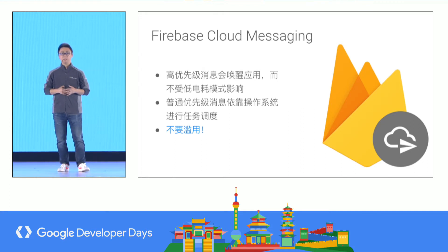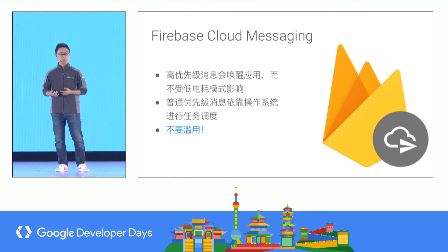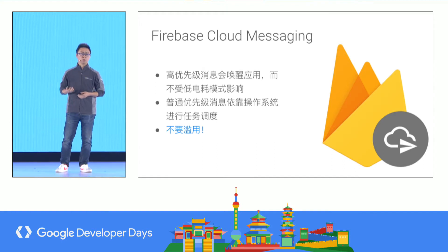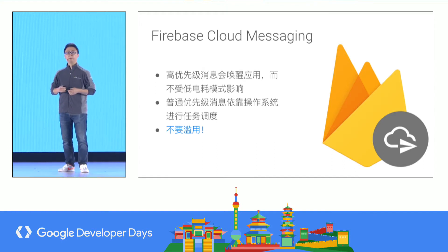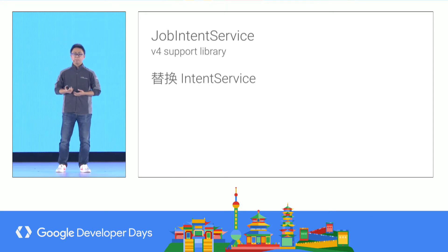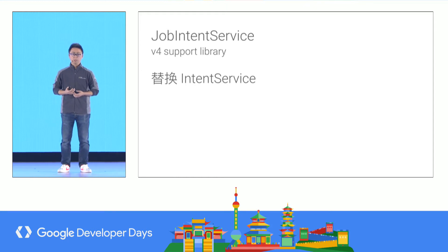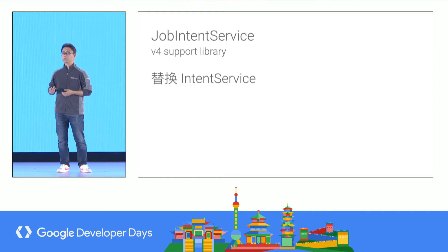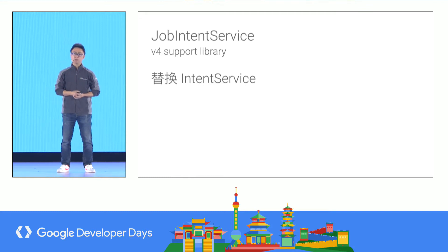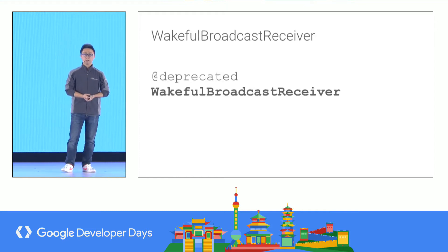Developers can use Firebase Cloud Messaging with JMS call support. For high-priority messages, it will wake up the application and will not be influenced by the low battery model. For normal-priority messages, you rely on the OS to schedule jobs. Do not abuse this. Also, in the new version, we have JobIntentService from the support library to replace IntentService, because it understands the new logic behind the new system, using JobScheduler for Android O and above and the old behavior for older versions.